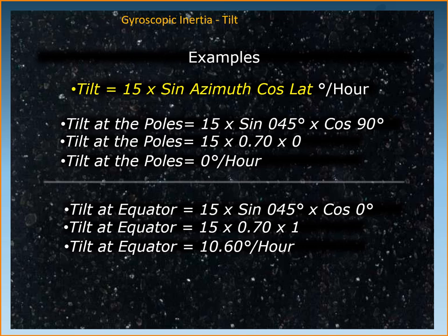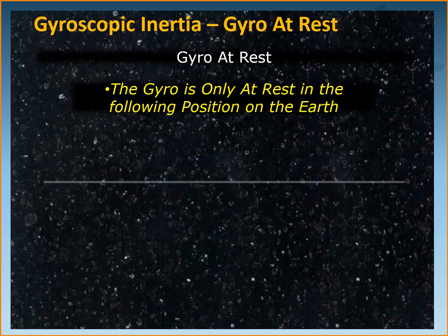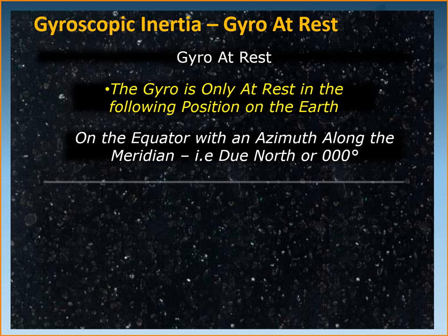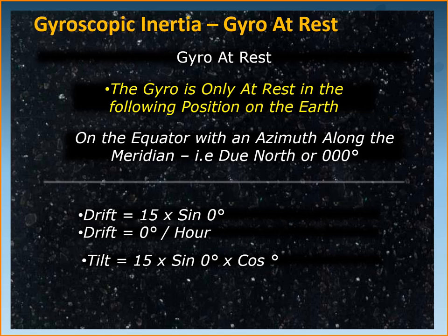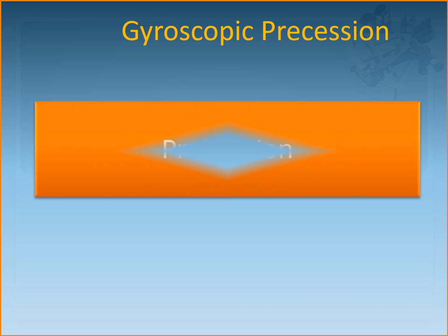The gyro will be at rest — meaning there will be no drift and no tilt — only in the following position on earth: placed on the equator with its axis along the meridian, that is the gyroscope axis pointing due north or 000 degrees. Only then will both drift and tilt be zero. That is the only position on the earth's surface where the gyro is at rest.